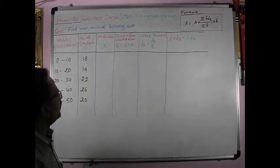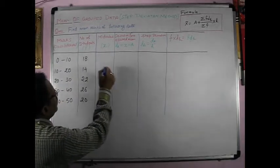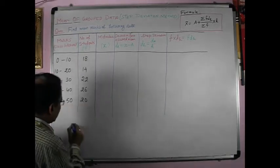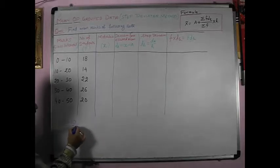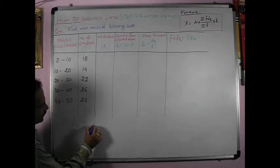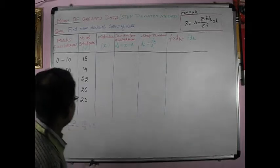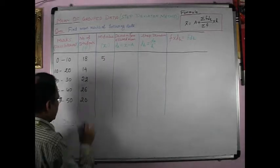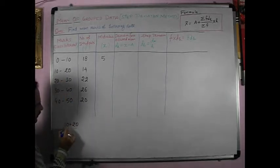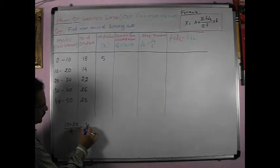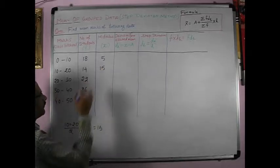Mid-value is what? Mid-value is 0 plus 10 divided by 2. Here I am writing 0 plus 10 divided by 2 is equal to 10 by 2 is equal to 5. So, this is 5. And again, I write 10 plus 20 divided by 2, 30 by 2 is equal to 15.